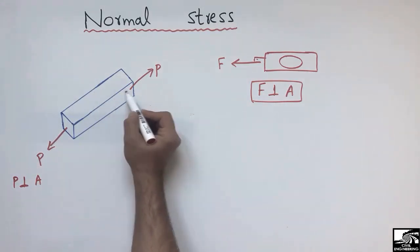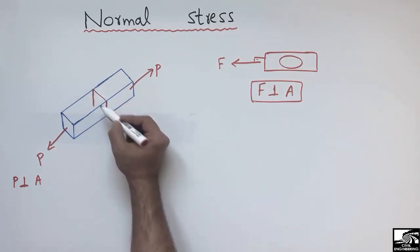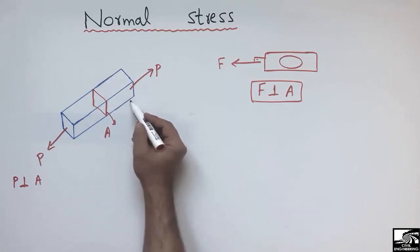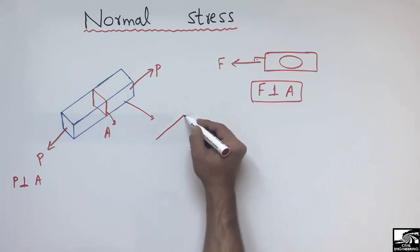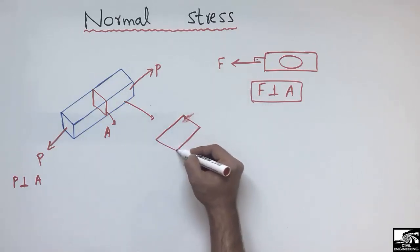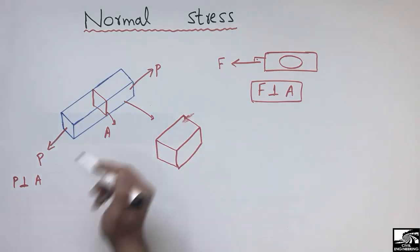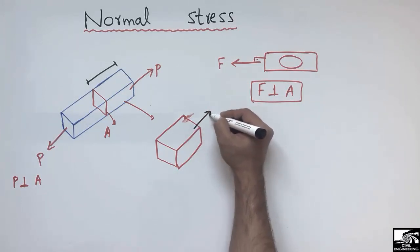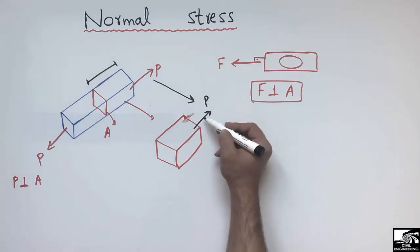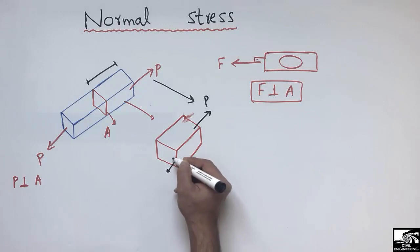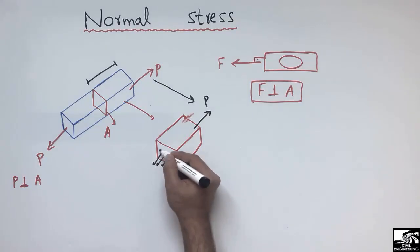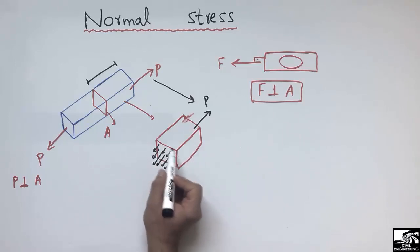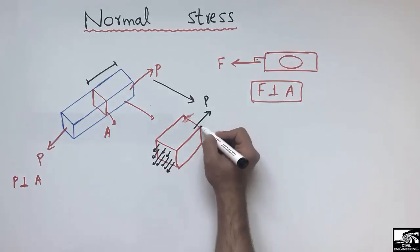Now, if I draw the cross-section of this object, this section of the beam is drawn here to show the normal stresses. The normal force P is shown acting normal to this area, and due to this force there are stresses created inside the object. These are called normal stresses. Due to this applied force, there will be an opposite reaction force along this area, and these forces produce the normal stresses.